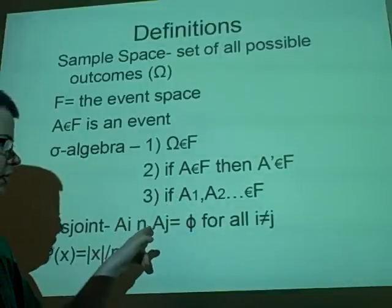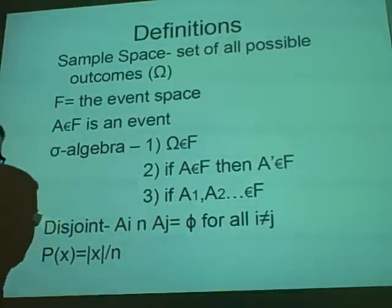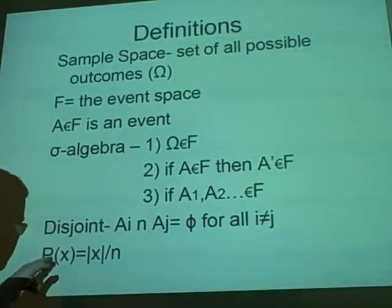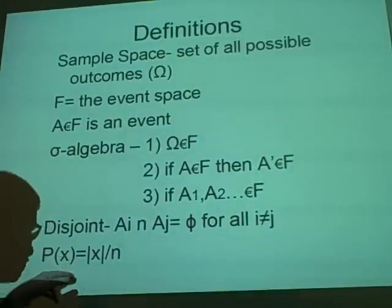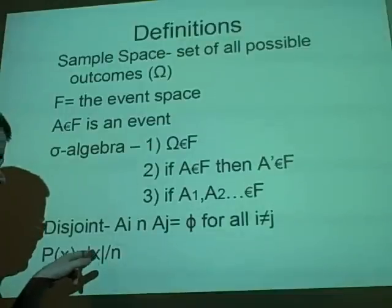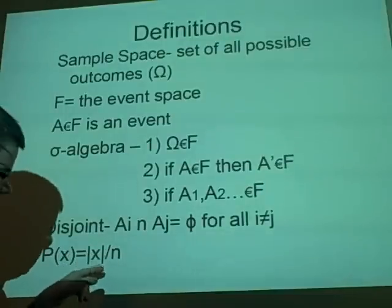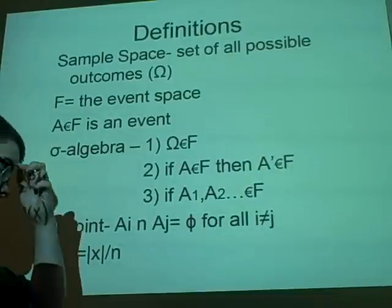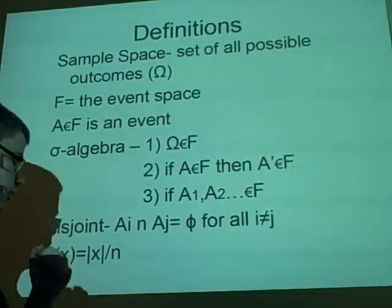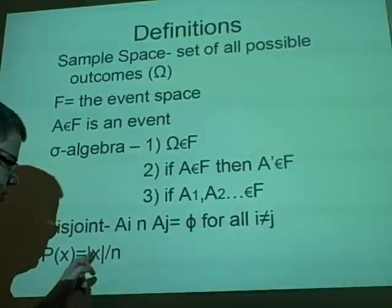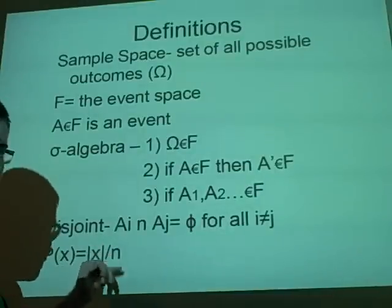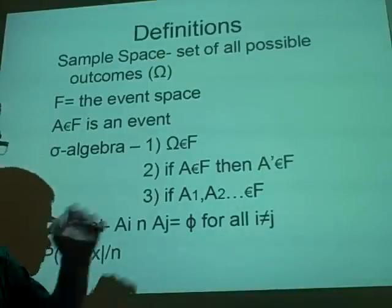So, we've got A1 and A2 have nothing the same. Now, finding the probability of something, we can set this out here. So, we have probability of X occurring is the size of X. Now, these modular signs mean it's not a determinant or modulus, it's the number of elements in X, divided by n, which is your number altogether.